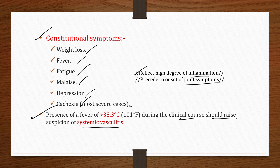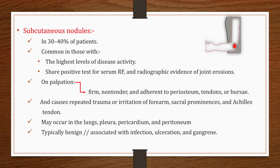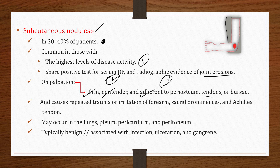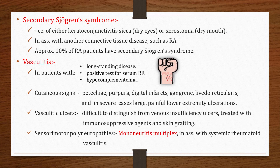Subcutaneous nodules occur in 30–40% of rheumatoid patients and are most common in those with the highest disease activity, positive serum rheumatoid factor, and radiographic evidence of joint erosions. On palpation, these nodules are firm, non-tender, and adherent to periosteum, tendons, and bursae. They commonly occur over bony prominences like the forearm, sacral prominences, and Achilles tendon, but may also appear in the lungs, pleura, pericardium, and peritoneum. Though typically benign, they can be associated with infection, ulceration, and gangrene.